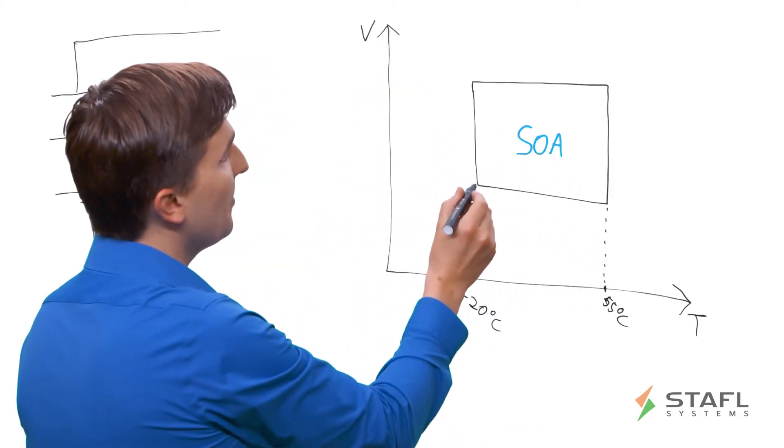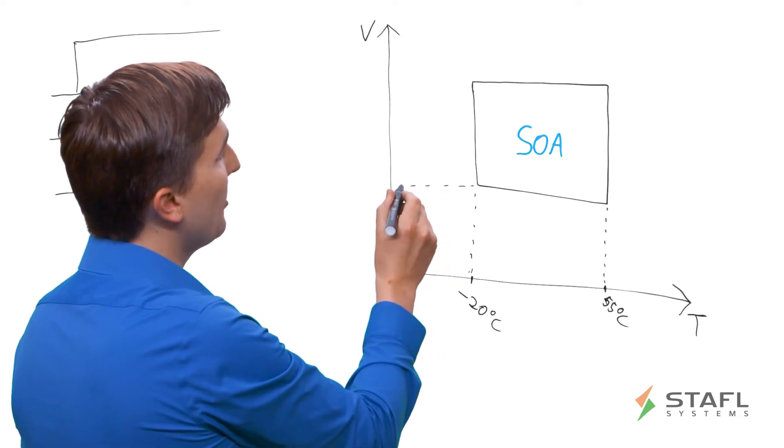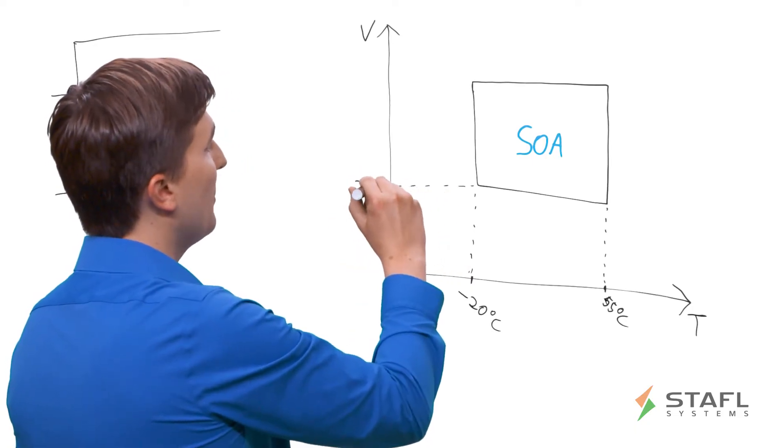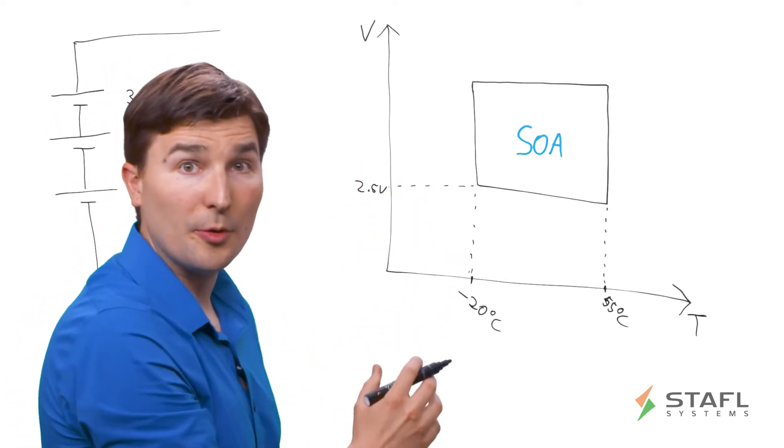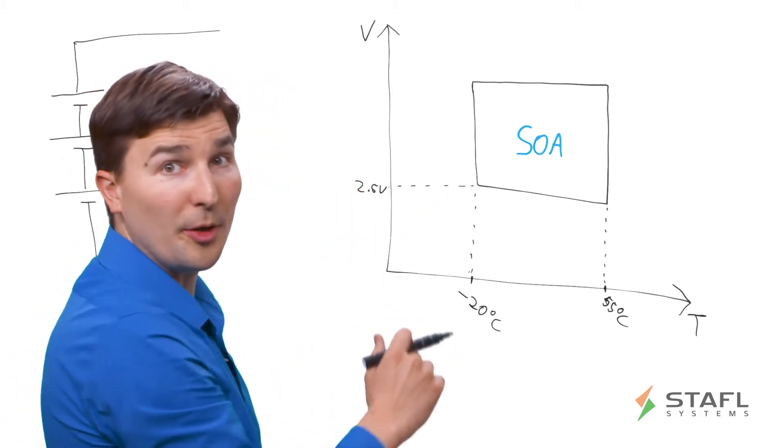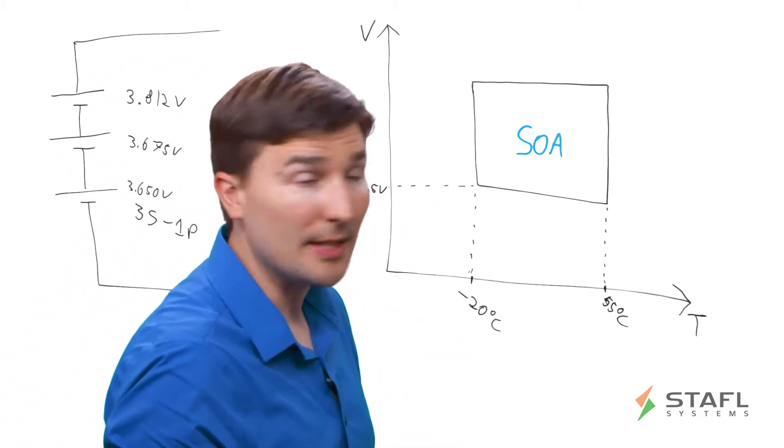On the y-axis, on the lower bound of the SOA, we have the lowest safe voltage for the battery cells. And this is 2.5 volts, typically for say, NMC chemistries.